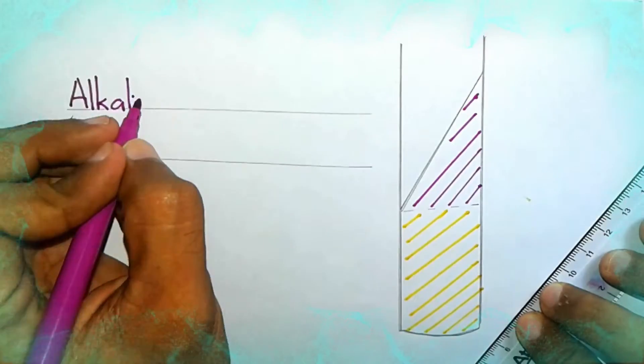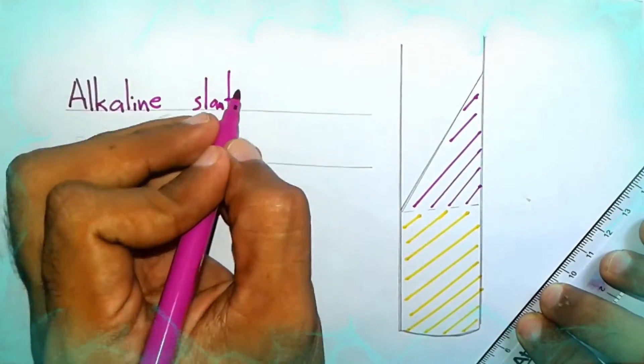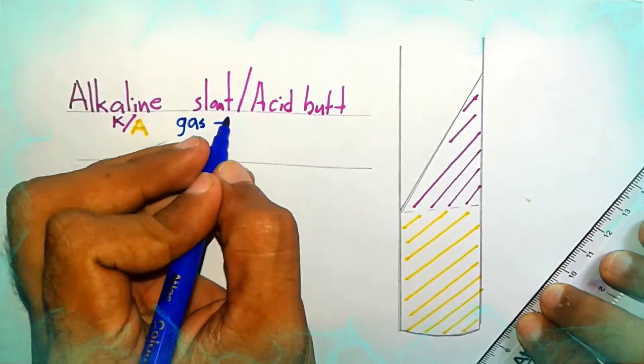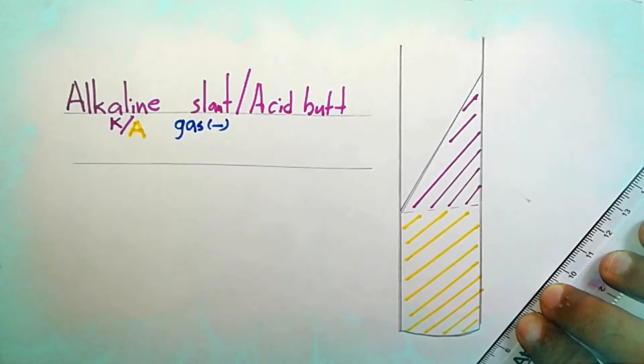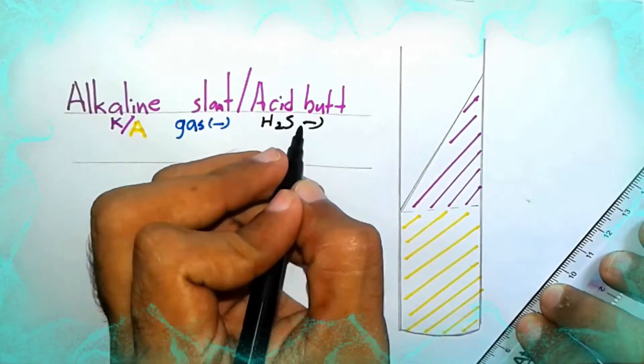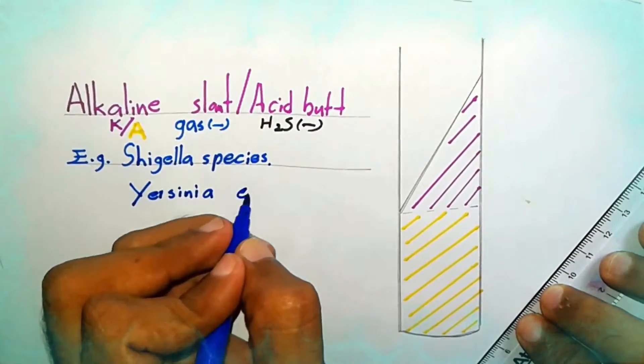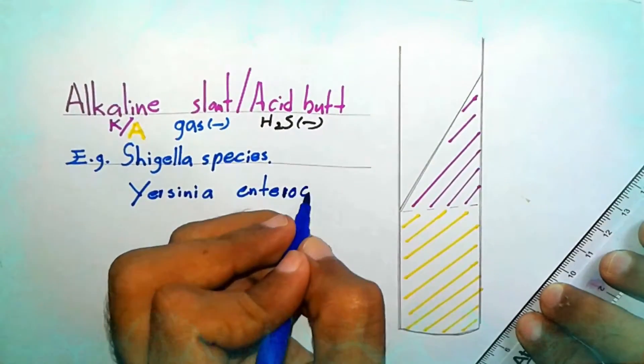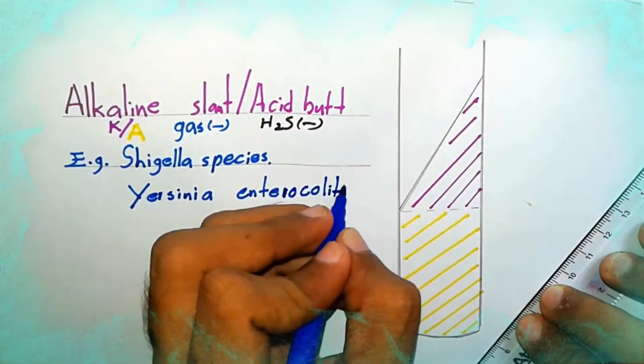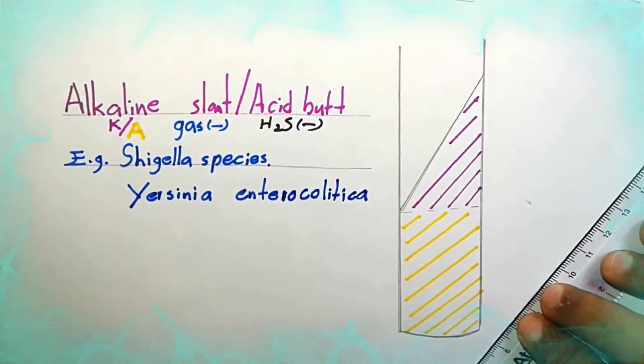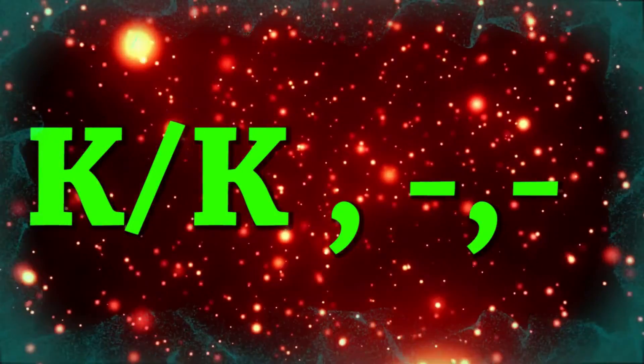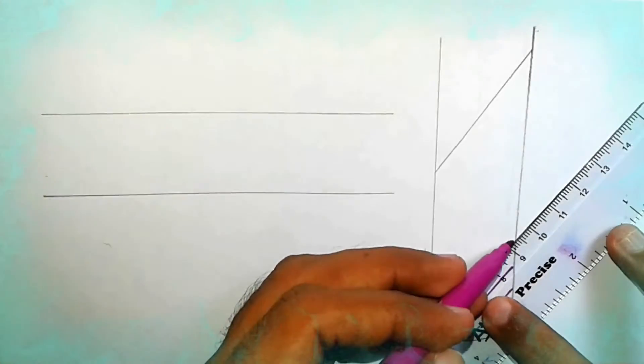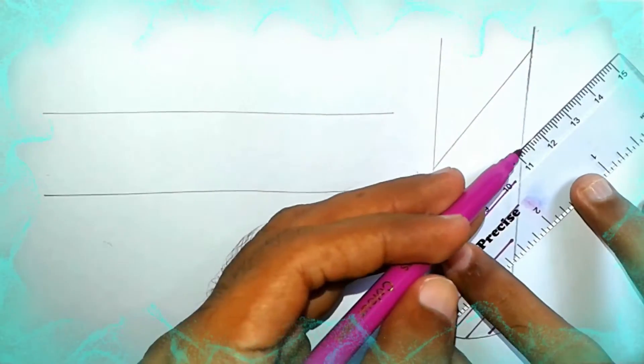In this KIA tube you can see alkaline slant and acid butt. Gas negative and H2S negative. Examples: Shigella species and Yersinia enterocolitica.